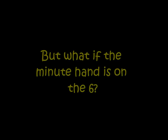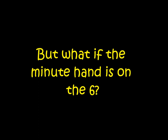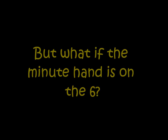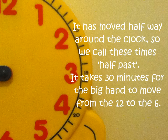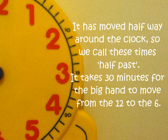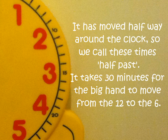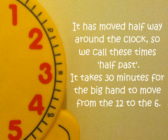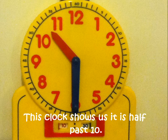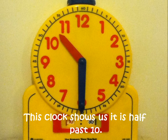But what if the minute hand is on the 6? It has moved halfway around the clock, so we call these times half past. It takes 30 minutes for the big hand to move from the 12 to the 6. This clock shows us it is half past 10.